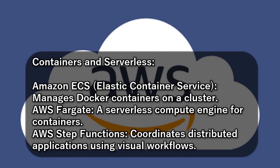Containers and Serverless: Amazon ECS (Elastic Container Service) manages Docker containers on a cluster. AWS Fargate is a serverless compute engine for containers. AWS Step Functions coordinates distributed applications using visual workflows.